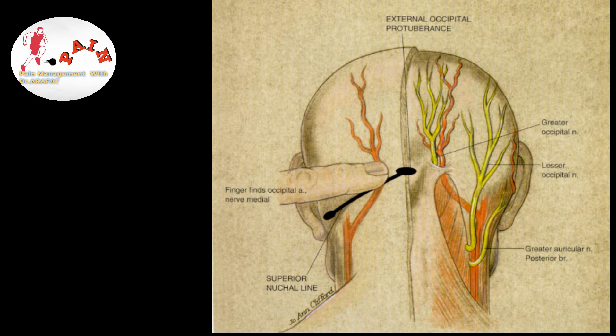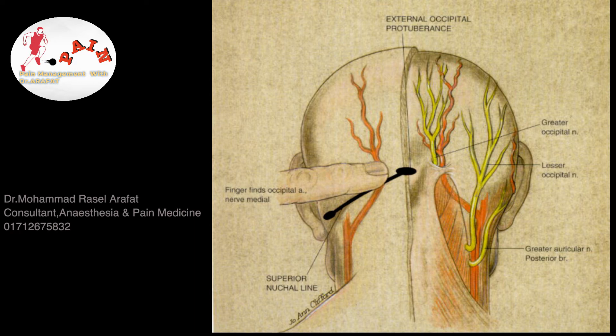The greater occipital nerve block process is an injection into the soft tissues of the back of your head, next to a larger occipital nerve that is a potential cause of your headaches.